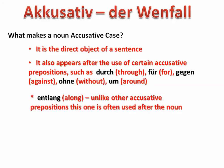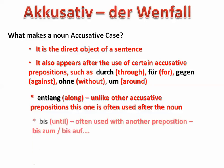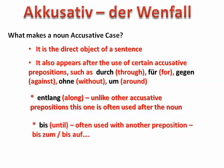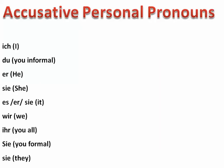You also have the preposition entlang, and it's not like the others because it often is written after the object of the preposition, whereas the object of durch, für, gegen, ohne, um will come after the preposition. Entlang will come after it — like 'ich gehe den Fluss entlang,' so I'm going along the river. Bis means 'until,' and it can sometimes be used with other prepositions as well, but by itself it's accusative.